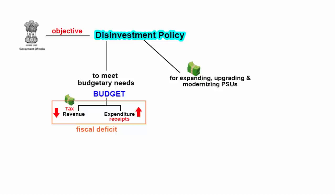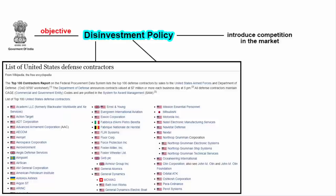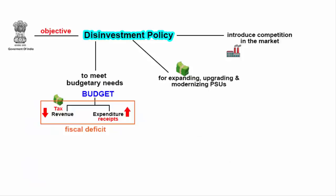Another reason behind disinvestment is to introduce competition in the market. A good example is United States defense contractors — there are so many that provide products and services to the US military. When firms compete with each other, consumers get the best possible prices, quantity and quality of goods and services. Here the consumer can be both the general public and the government. Another benefit of competition is that it opens the door to innovation: if you are producing a particular product, someone in the market will try to make a better one, which helps in expanding the market.